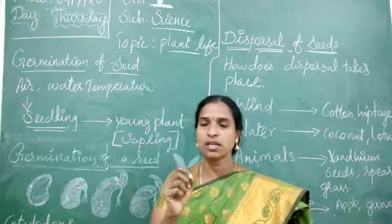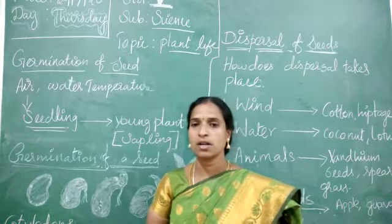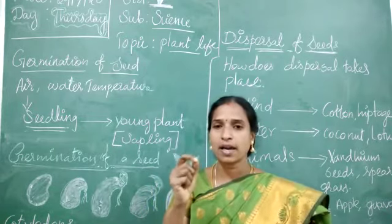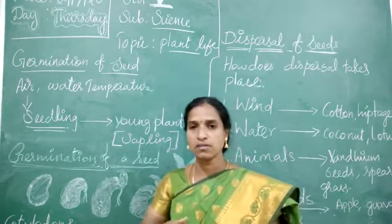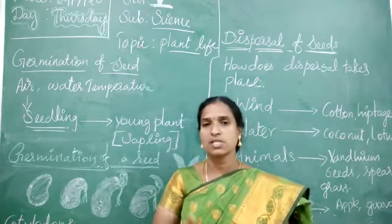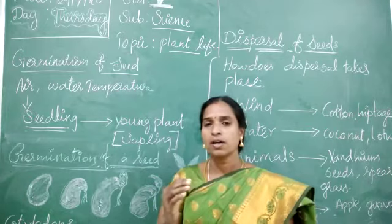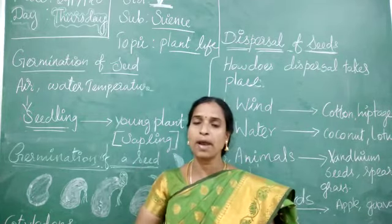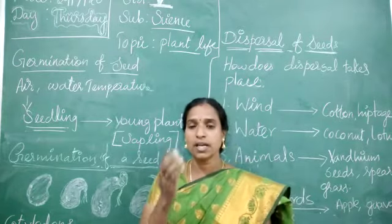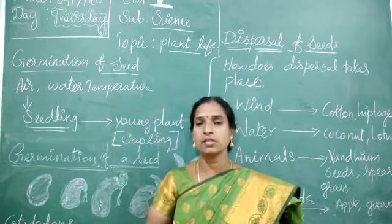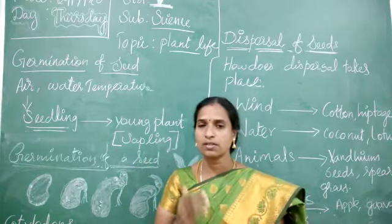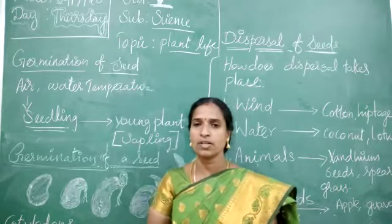When a seed gets favorable conditions like a proper amount of water, air, and temperature, then it will start to grow into a seedling — a young plant. So when a seed gets favorable conditions then it will grow into a new plant. This is known as germination.